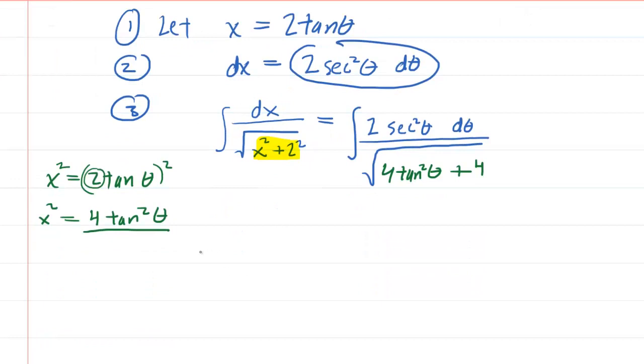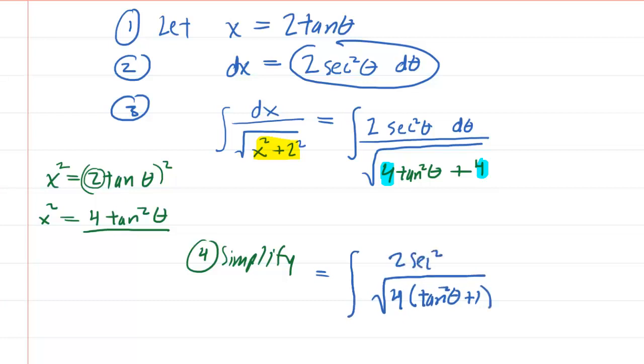The next step is to kind of simplify. And often times this involves a series of simplifications. The first thing we might notice is that we can factor out a 4 in the denominator. Although that 4 will still be underneath the square root. So it will be 4 times tangent squared of theta plus 1. The numerator remains the same.